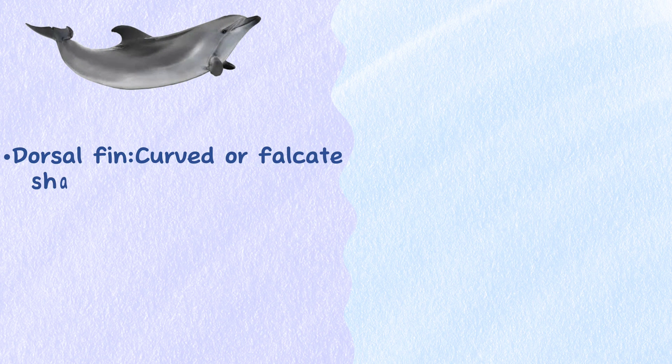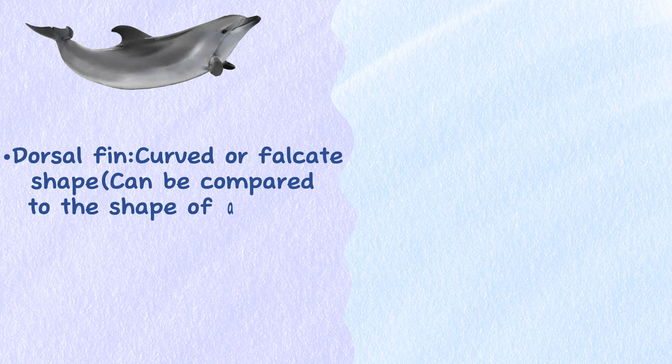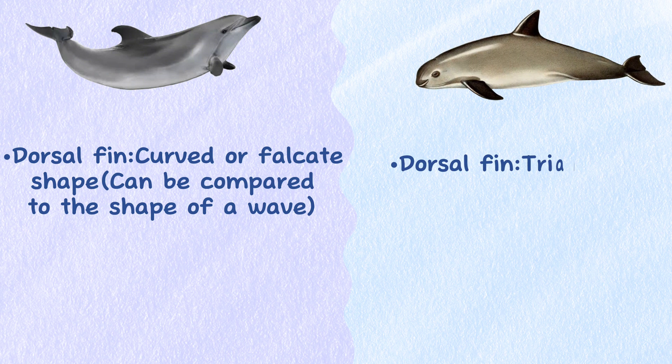Dorsal fin. Dolphins have a curved or falcate dorsal fin, which can be compared to the shape of a wave. In contrast, porpoises have a triangular dorsal fin, similar to a shark's.